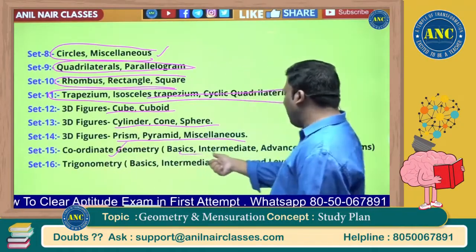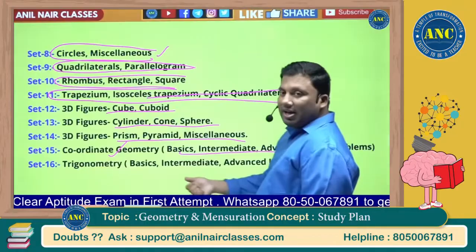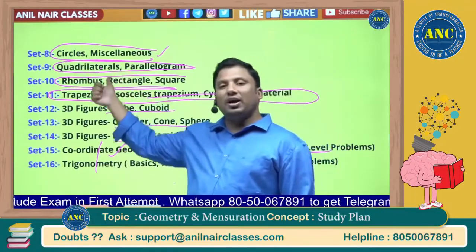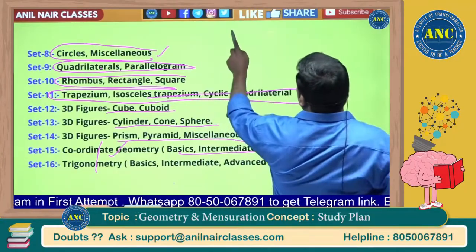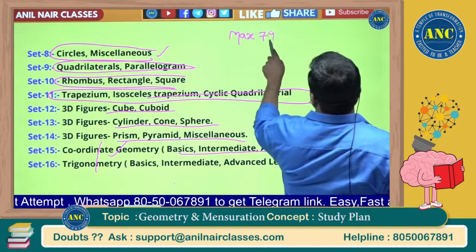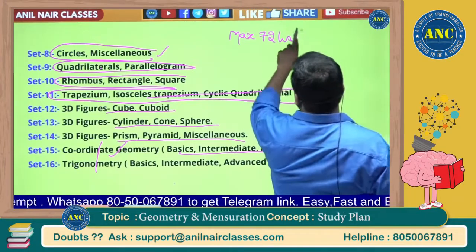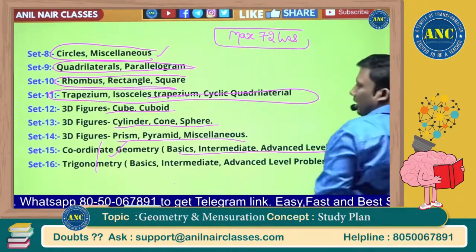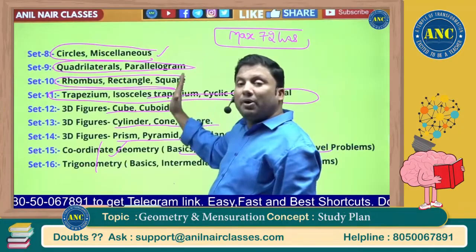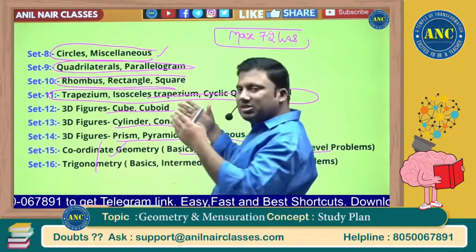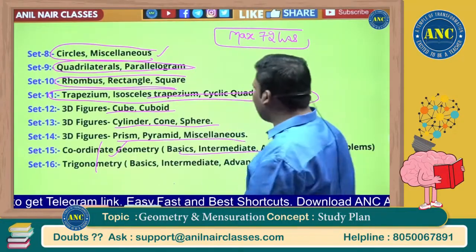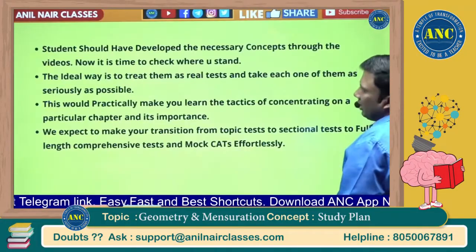Then coordinate geometry — basics, intermediate, and advanced level. That is why sets 15 and 16 are kept last, building on everything you've learned. This entire topic requires a maximum of 72 hours. It is a vast topic because the syllabus is vast, and extra class time will be dedicated to students starting from tomorrow.